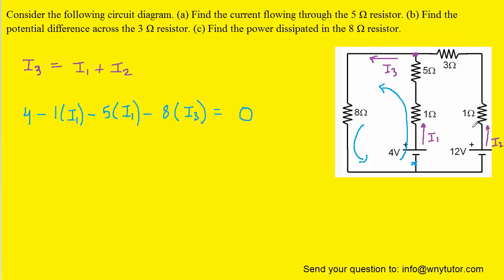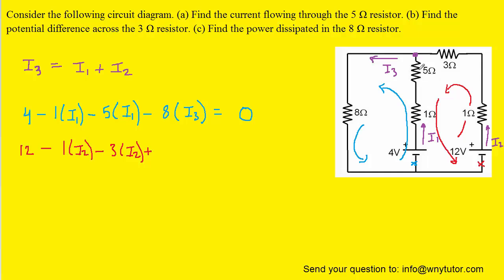We need one more equation since there are three variables. For the red loop, starting at the marked point, moving from the negative to positive terminal of the 12 V battery gives a positive 12 volt change. Moving with current I2 through a 1 ohm resistor gives minus 1·I2, and through a 3 ohm resistor gives minus 3·I2. Then moving against current I1 through two resistors gives positive potential changes equal to resistance times I1. Finally, moving from the positive to negative terminal of the 4 V battery gives minus 4 volts, and we set the total equal to zero.